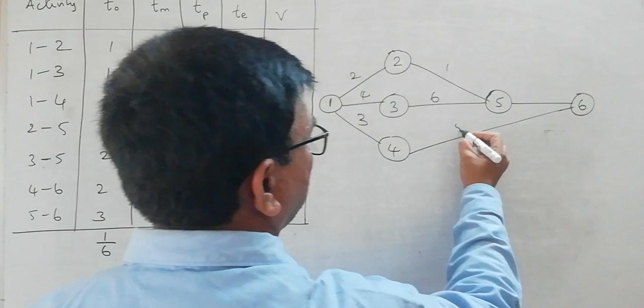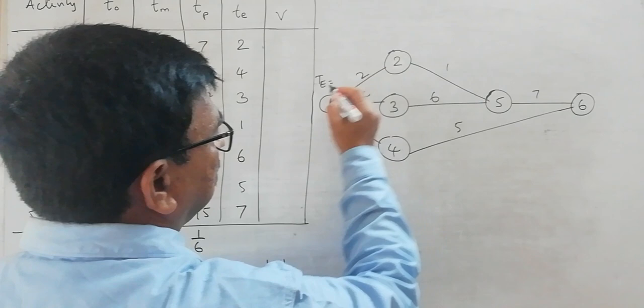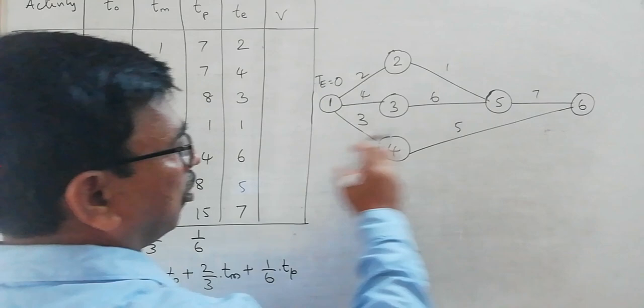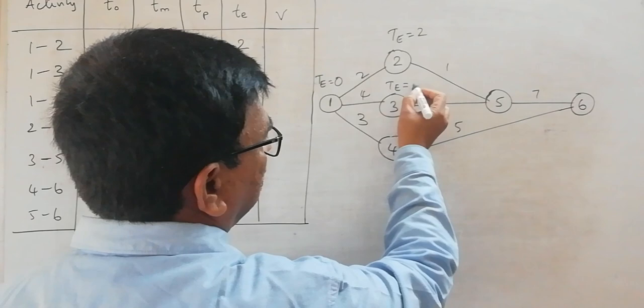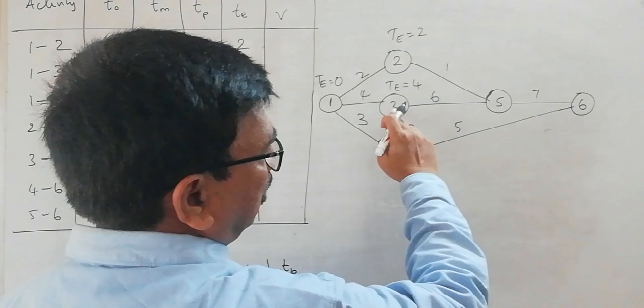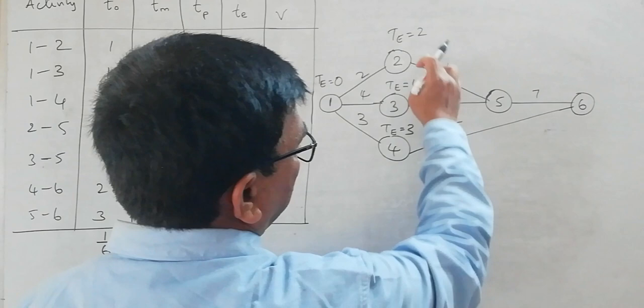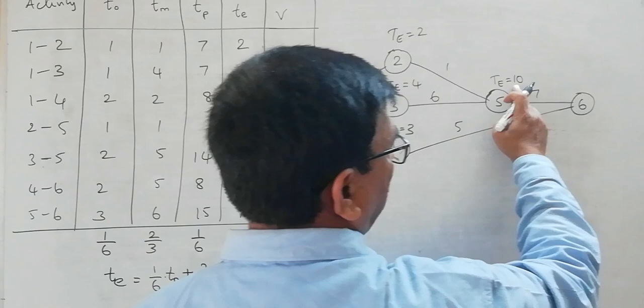Now we estimate the earliest times. At node 1, TE = 0. For node 2: 0 + 2 = 2. For node 3: 0 + 4 = 4. For node 4: 0 + 3 = 3. At node 5, there are two paths — from node 2: 2 + 1 = 3, and from node 3: 4 + 6 = 10. Taking the highest value, TE at node 5 = 10, giving 10 + 7 = 17 at node 6. Along the path via node 4: 3 + 5 = 8, and considering the larger value, TE at node 6 = 17.